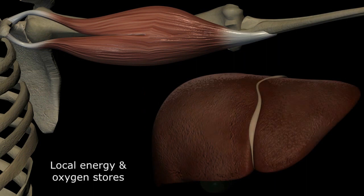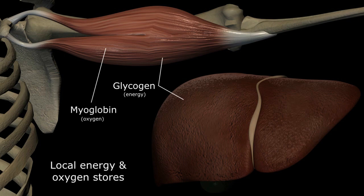some tissues, like skeletal muscles and liver, possess local energy and oxygen stores in the form of glycogen and myoglobin, which can be quickly mobilized to supplement the limited blood supply.